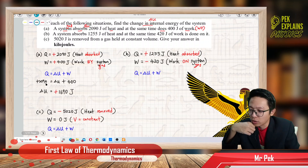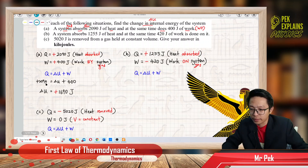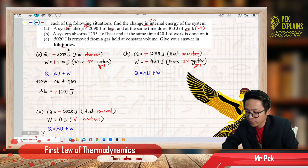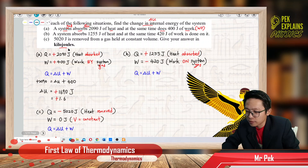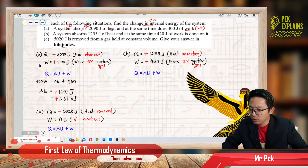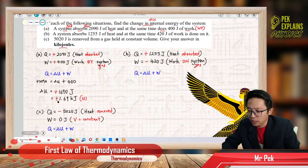And we can conclude that — but the question wants the answer in kilojoule. So we must change to kilojoule. It is positive 1.69 kilojoule, divided by 1000. So delta U is positive, which means internal energy increases and the temperature increases.